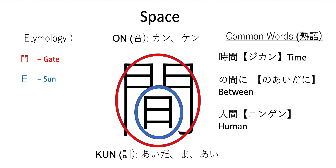Let's talk about some common words. Some common words include jikan. Now, we learned the symbol for ji, or time, yesterday. And so the second one, interval, would mean that interval of time.